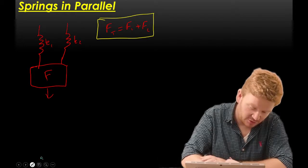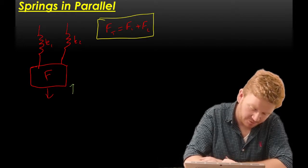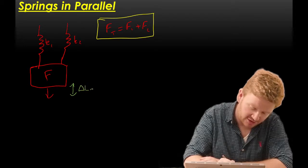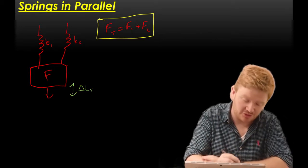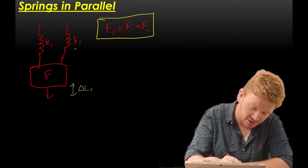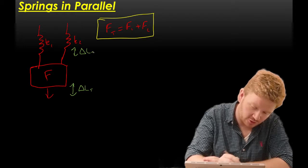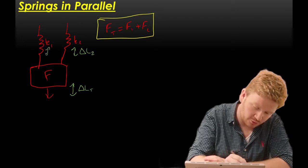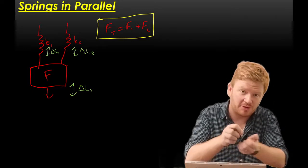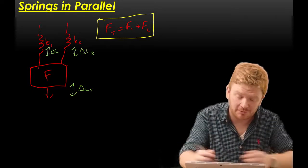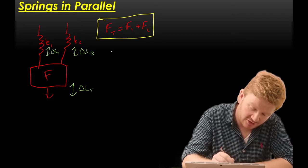The second thing I can say is, well, let's think about the extension here. So both of these will move down with delta Lt. But because the springs are tied together, because they're attached to each other, spring 2 will move with delta L2, and spring 1 will move with delta L1. Well, they're going to be the same, because both the springs are being pulled together, so they're going to extend by the same amount.